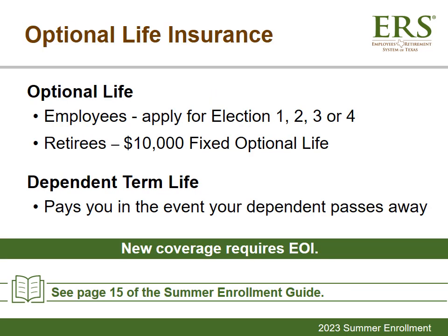The next benefit is life insurance. If you're an active employee, you may choose coverage from one to four times your annual salary, up to $400,000 — Election 1 equals your annual salary, Election 2 is two times, Election 3 is three times, and Election 4 is four times your annual salary. If you enroll in or increase your optional term life insurance, you will need to initiate the evidence of insurability process online and complete the EOI application. Retirees not currently enrolled in optional term life insurance can apply for the retiree $10,000 fixed optional life insurance through the EOI process, though this benefit is not available to active employees.